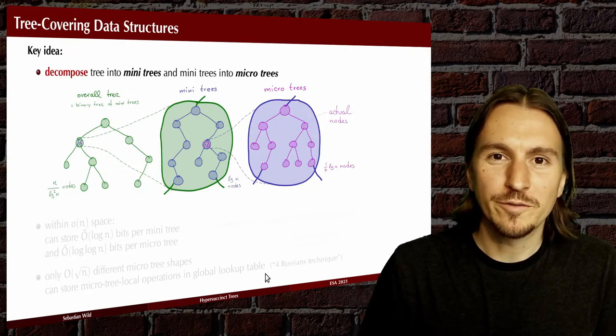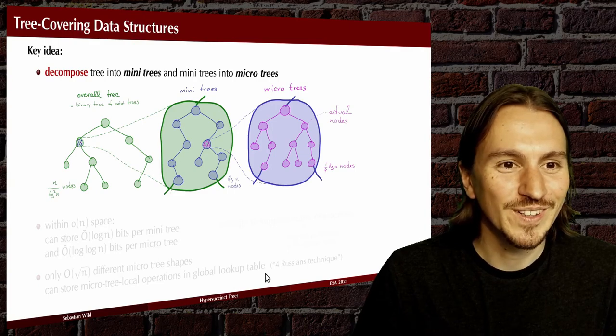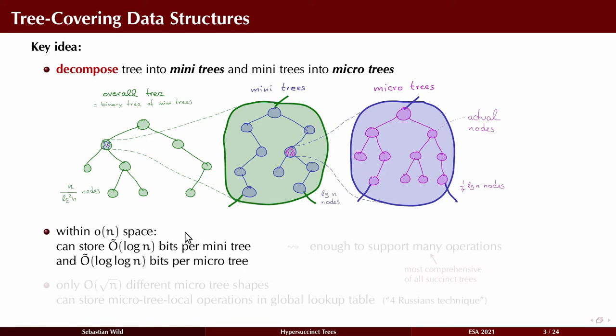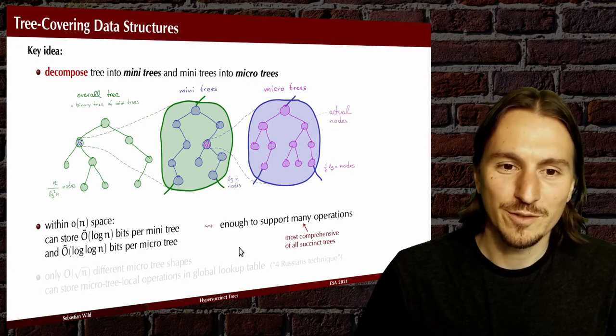Tree covering is one of these approaches to store a tree succinctly. Here the core idea is to decompose a tree first into mini trees and then the mini trees again into micro trees. So the overall tree is represented like in this picture, it's a tree of roughly n over log squared nodes, but each of the nodes is a mini tree, which itself consists of roughly log n nodes. And each of those nodes is again a micro tree consisting of at most log n divided by four nodes. Within little o of n extra space, you can afford to store log n bits for each of the mini trees and log log n bits for each of the micro trees. And that's enough to support all these operations from the table on the last slide.